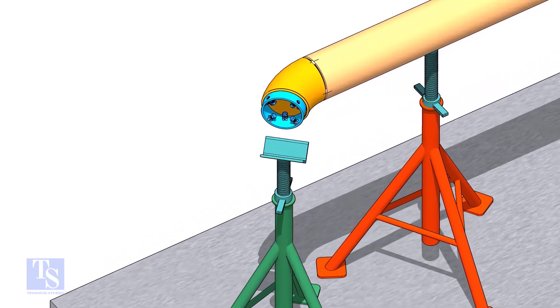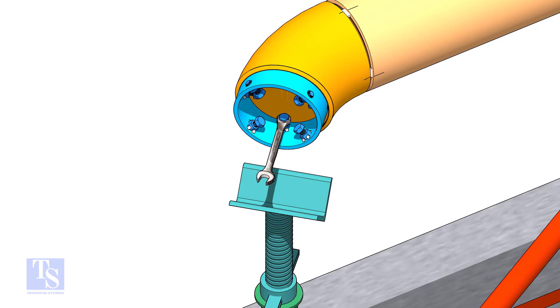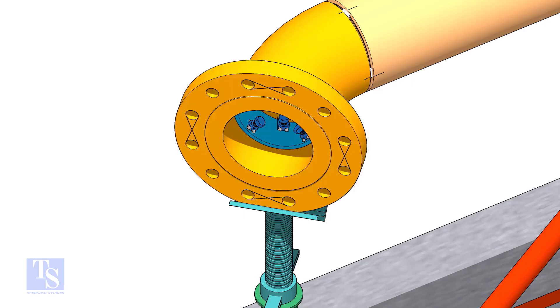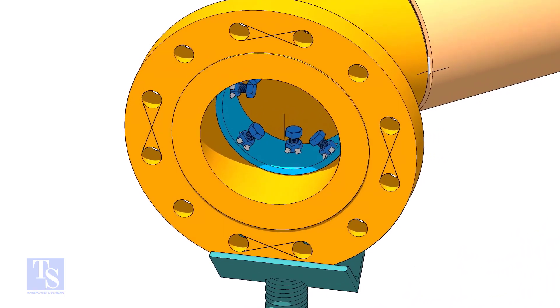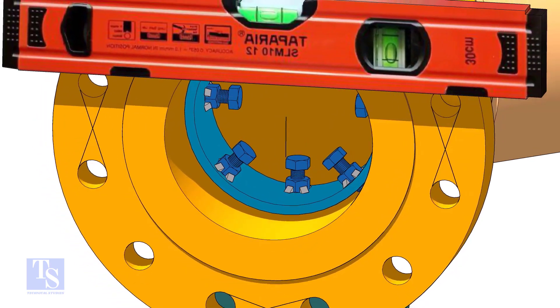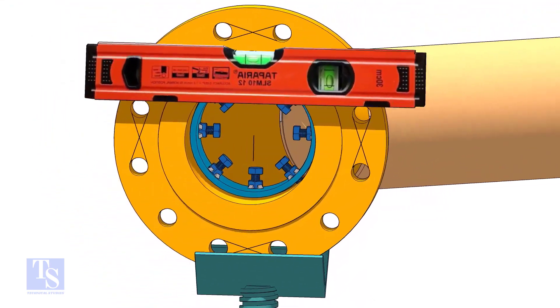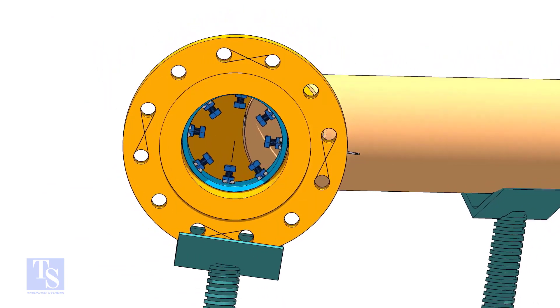Put the clamp in the elbow and tighten lightly. Put the flange in its position and maintain the level. Tighten the clamp bolts lightly. Check the gap and the overlap.